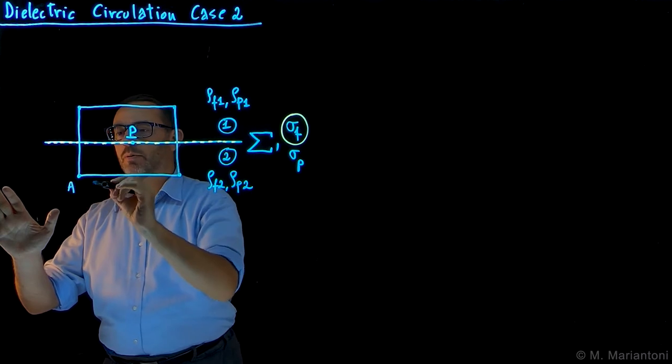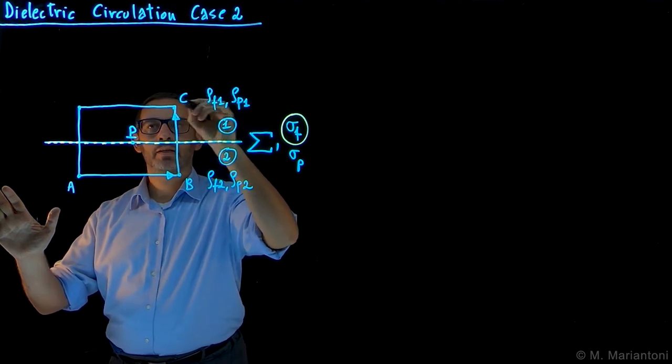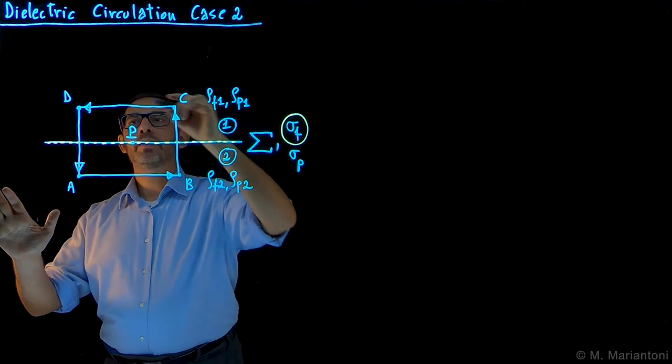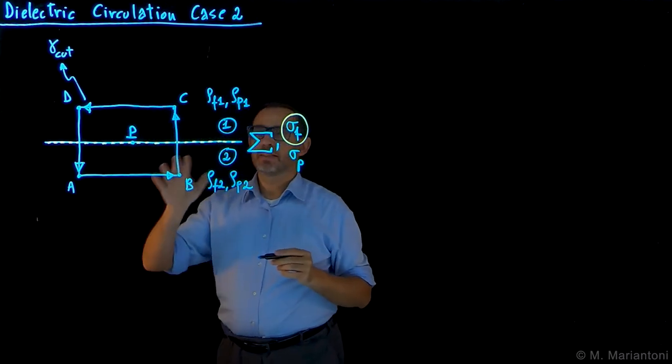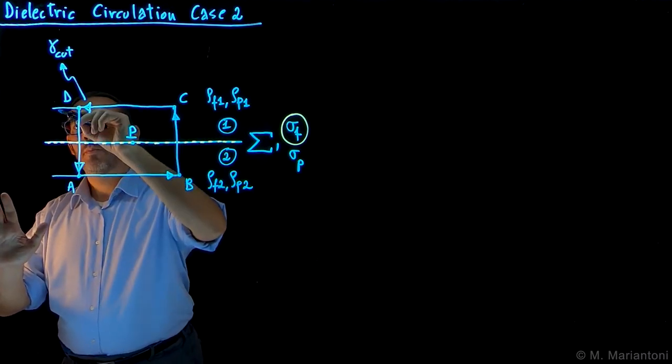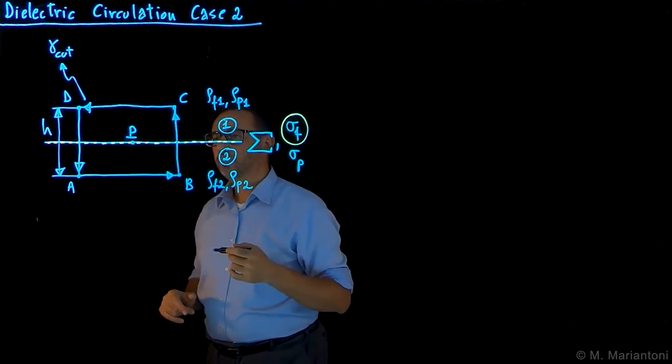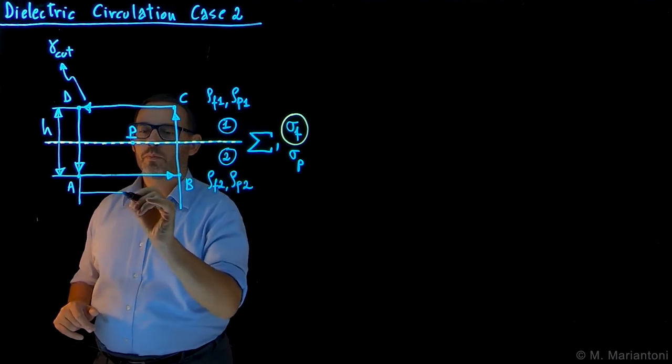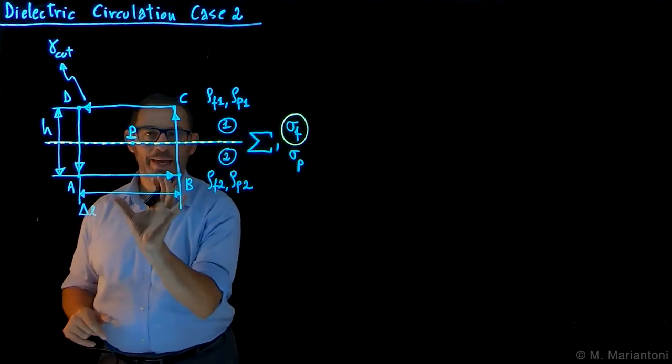We start from point capital A, we reach point capital B, we then reach point capital C and point capital D, and from point capital D finally we reach point capital A. This line here is what we call gamma cut, which is a closed line. Half of it is in the region 2 and half of it in region 1. The height of this line, as always, we call it H. Half of H is above and half of H is below, region 1 and 2 respectively. The length of AB, which is the same as CD, this is delta L, which is a physics infinitesimal, delta L.